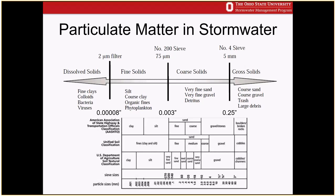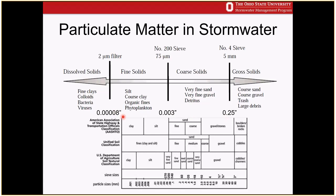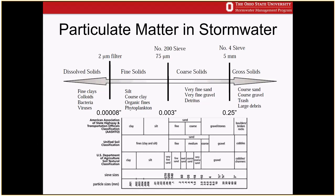A quick guide to particulate matter in stormwater: dissolved solids are less than 2 micrometers; silts and clays fall between 2 and 75 micrometers (the #200 sieve); sands and gravels range between the #200 sieve and #4 sieve; and gross solids are larger than the #4 sieve. Throughout this presentation I'll use the USDA classification for sand, silt, and clay, though ASTM and other engineering classifications also exist.